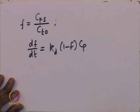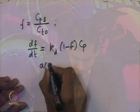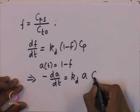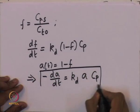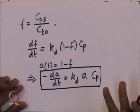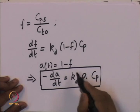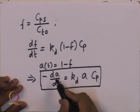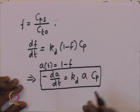By definition, the activity of the catalyst is the ratio of the reaction rate at a particular time to the reaction rate when the catalyst is fresh (unused), which equals (1 − F). Therefore, the activity A = 1 − F, and we can rewrite the equation as −dA/dt = K_d · A · C_P. This equation captures the catalyst activity as a function of the gas-phase poison concentration and the decay rate constant. If C_P is measurable, we can estimate the dynamics of catalyst decay.